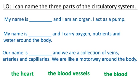The second sentence is: 'My name is ___, and I carry oxygen, nutrients, and water around the body.' The last one is: 'Our name is ___, and we are a collection of veins, arteries, and capillaries. We are like a motorway around the body.'